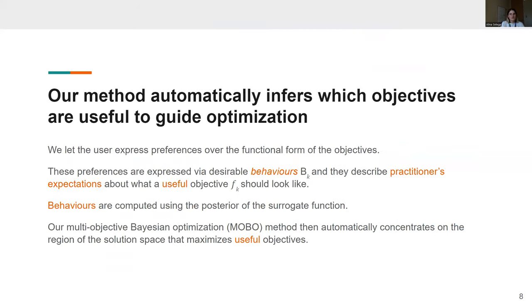We address this with our method that automatically infers which objectives are useful to guide optimization. And we do this by letting the user express preferences over the functional form of the objectives.